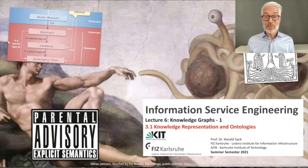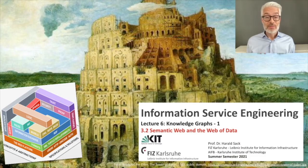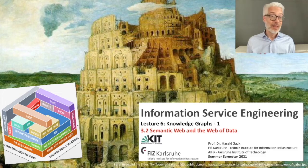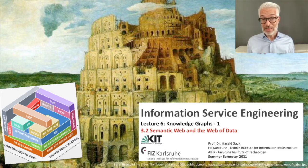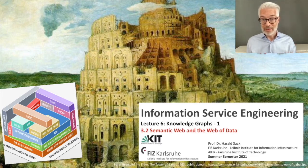We need languages to express these knowledge representations and ontologies. These languages have been defined for the semantic web and the web of data. The semantic web is an extension of the current web where all pieces of information are given explicit meaning — the meaning is explicitly modeled and represented so that we can make use of it in an automated way and so that machines are able to correctly interpret the meaning of what is represented there.